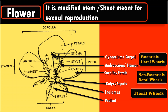Corolla is followed by two essential whorls, namely androecium and gynoecium. Androecium is the third whorl; its members are called stamens. Each stamen shows a lower filament and upper anther. Stamens produce pollen which in turn produces male gametes. The last whorl of the flower is gynoecium; its members are called carpels or pistils. Each carpel is made up of ovary, style, and stigma. The function of the carpel is to produce female gametes, and after fertilization, it produces seeds and fruits.